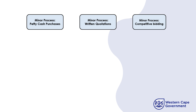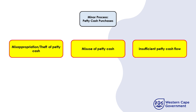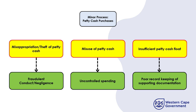Let us go back to our sub-process and identify potential events. For the petty cash process, the typical risks are: misappropriation or theft of petty cash funds, misuse of petty cash, and insufficient petty cash flow. The root causes are: opportunity for fraudulent conduct and negligence by officials in handling petty cash funds; funds being used for purchases not in the benefit of the organization; and poor record keeping and tracking of receipts and documentation leading to differences in the petty cash flow.